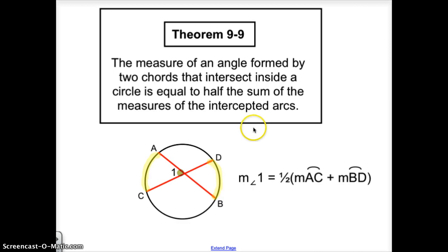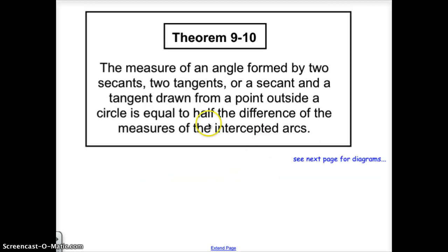So notice in the first theorem we're talking about an angle that's created on the interior of the circle and in the next theorem we're talking about an angle that's created on a point outside of the circle.